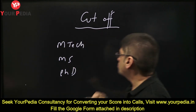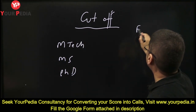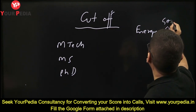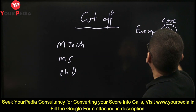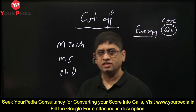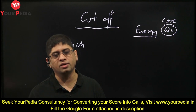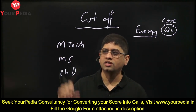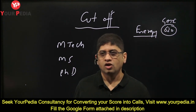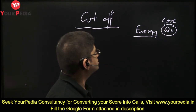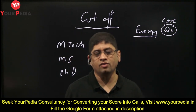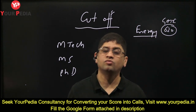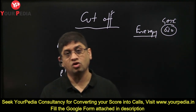Let me give you an example. Suppose it is written that for Energy Studies, someone with a 620 GATE score got in last year — that is the cut-off shown on an IIT website. What is not mentioned is whether this is for M.Tech or MS, whether this is for General category or SC/ST category, and which category it applies to — that is not mentioned.